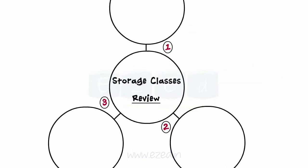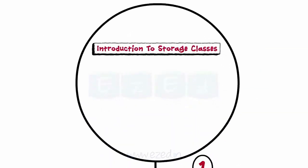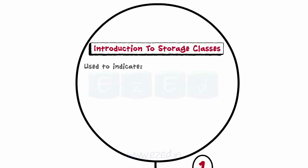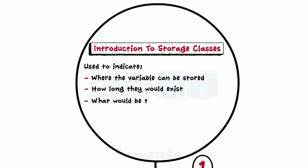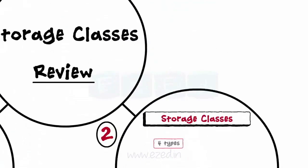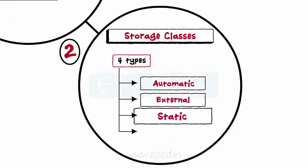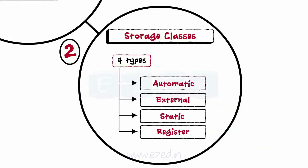Let's have a quick review of what we have learned. We started with an introduction to storage classes. To indicate where the variable can be stored, how long they would exist, what would be their region of existence, and what would be their default values, C has the concept of storage classes. There are four storage classes namely: Automatic, External, Static, and Register.